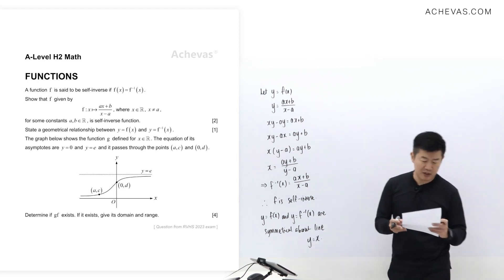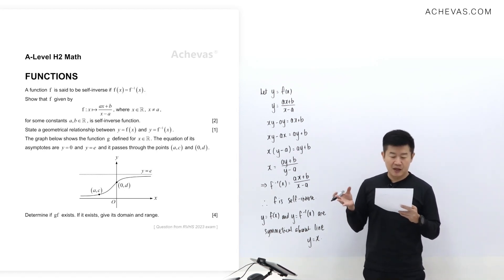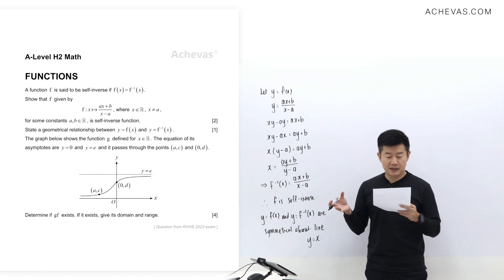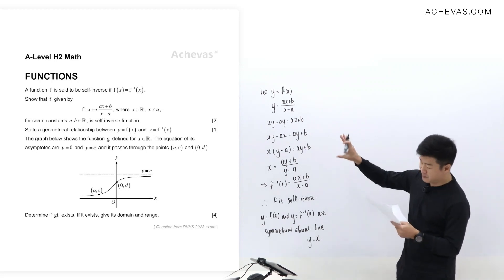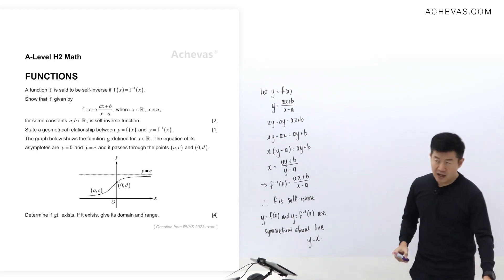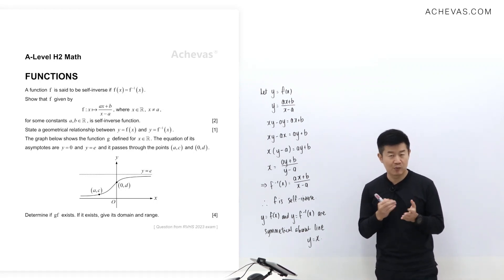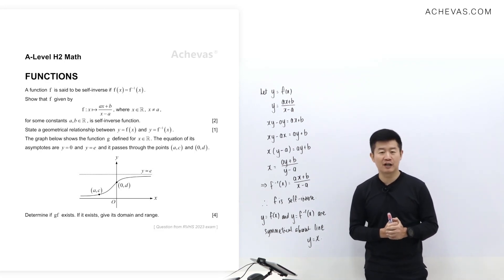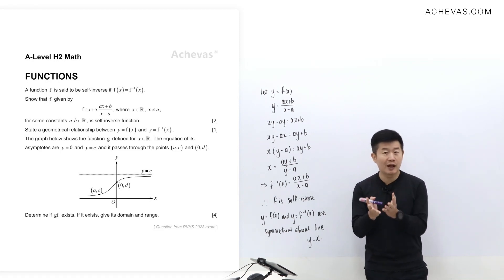The next part of the question tells us there is a graph representing the function g, and for the function g we are given that the domain is all real numbers. We want to determine if the composite function gf exists. In order to work on a composite function, it is very crucial for us to first work on the thinking framework more than the algebra.